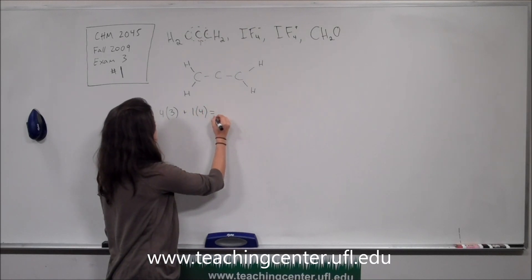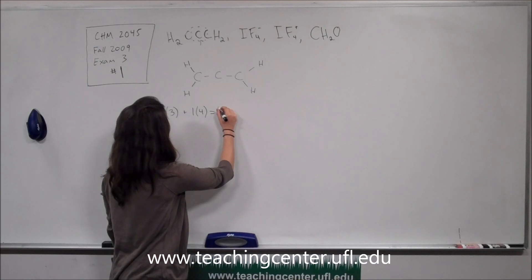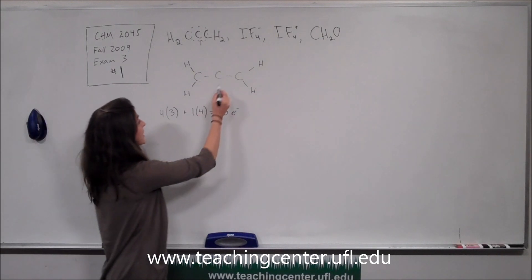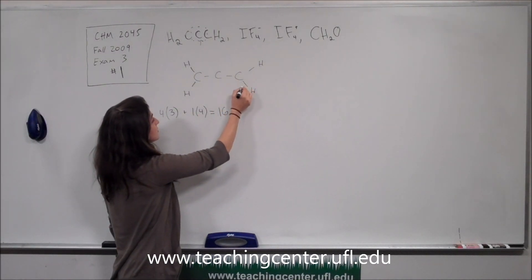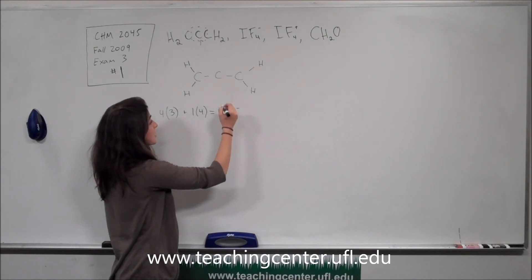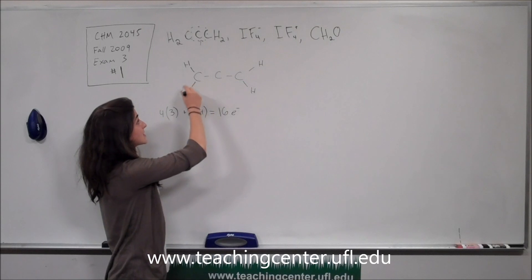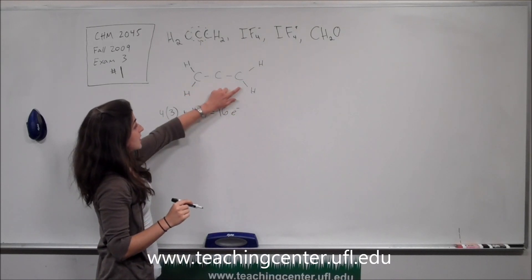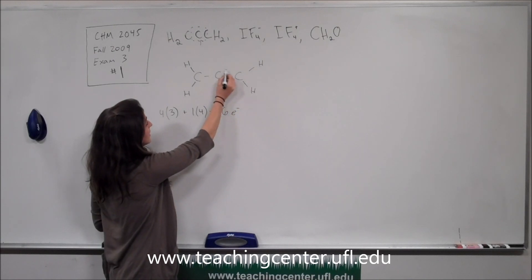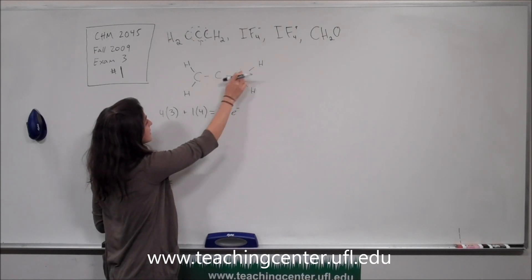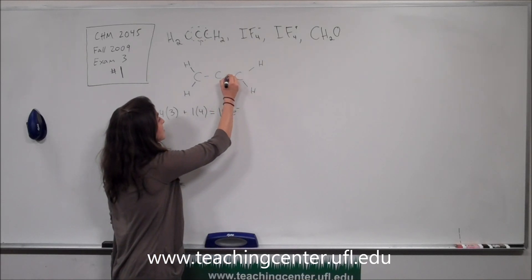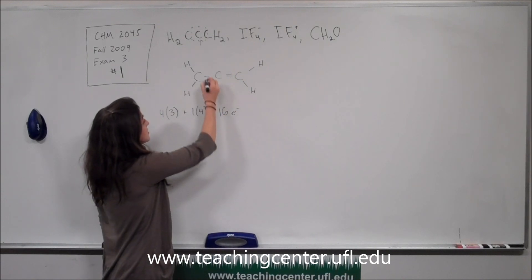That comes out to 16 electrons total. We've used 12 in our skeleton, so we have 4 more left over. Since hydrogen is satisfied with 2 electrons each, we're going to focus on the carbons. The central carbon needs its octet satisfied, so we can add a double bond on each side, using those remaining 4 electrons.